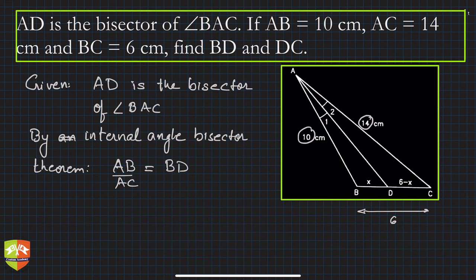We know that AB upon AC will be equal to BD upon DC. So a very direct question. Hence, AB is 10, AC is 14, and this is x upon 6 minus x.